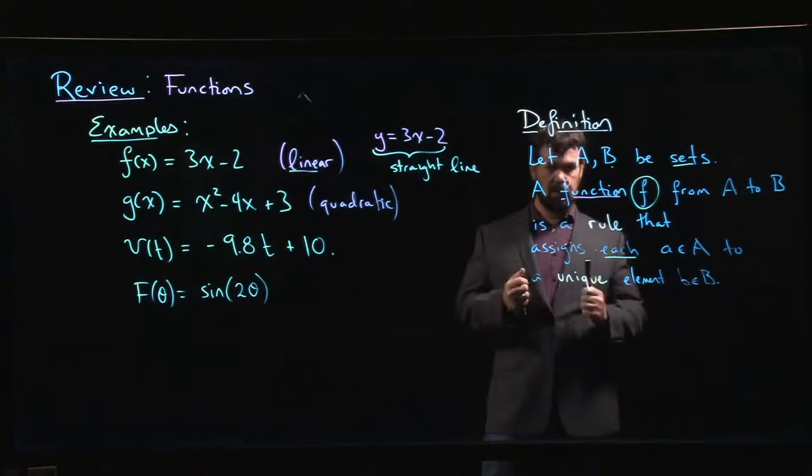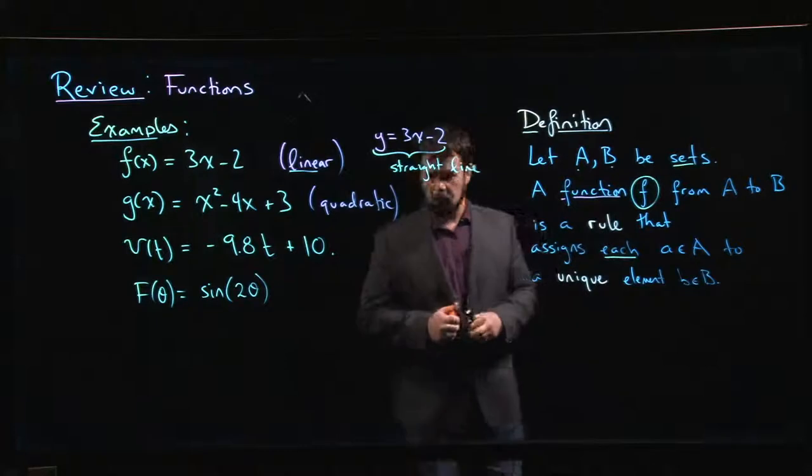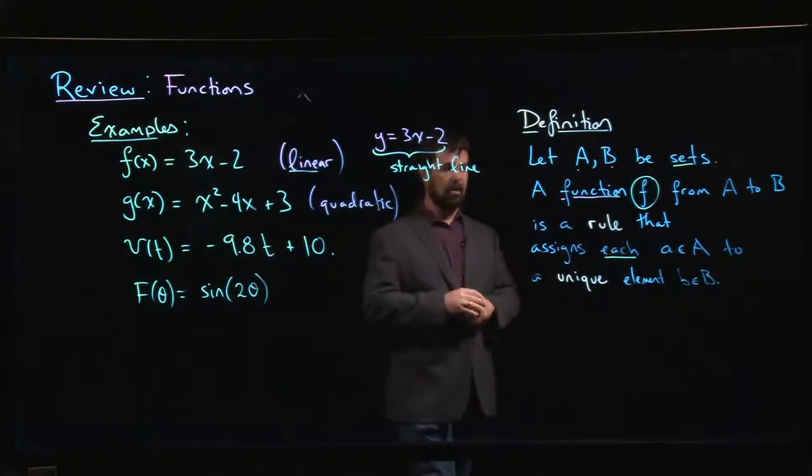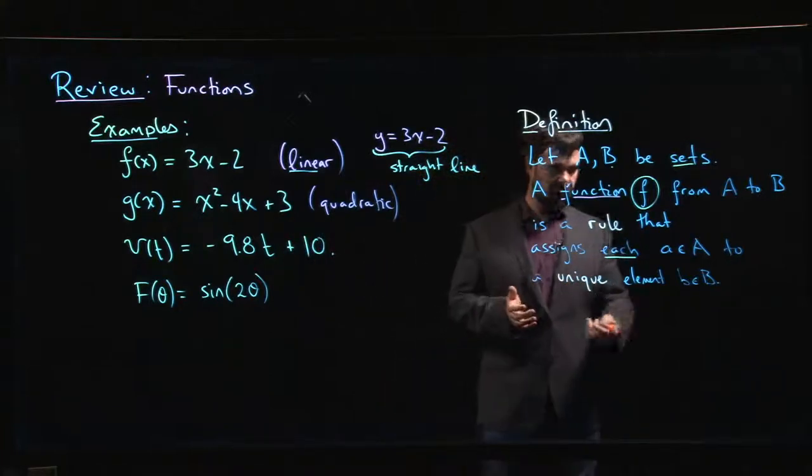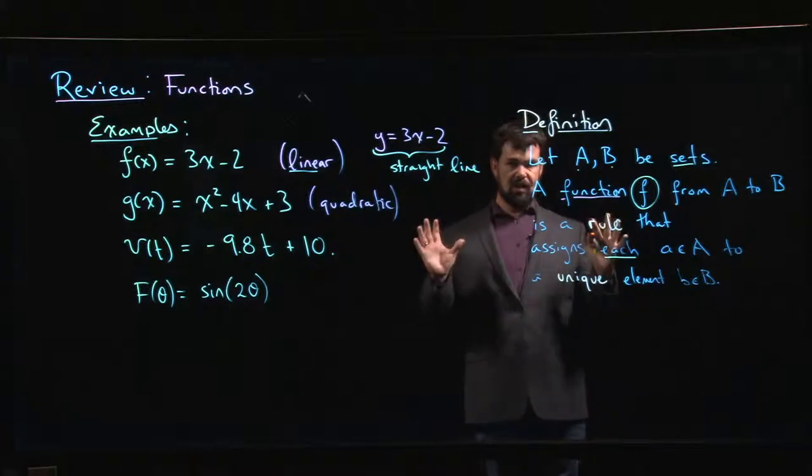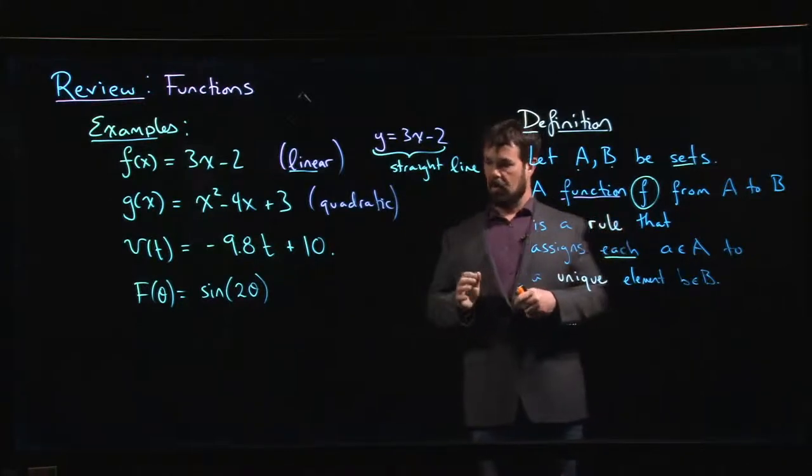So if you have a function where, let's say four is an element of your set, you can't decide that you want to assign the number four to three different things. You can only assign it to one particular value. This is the defining property of a function.